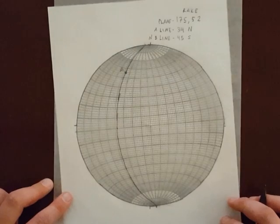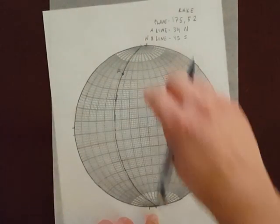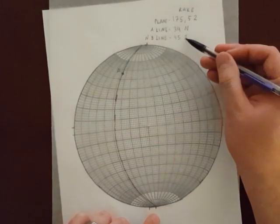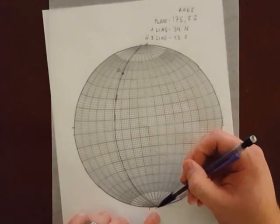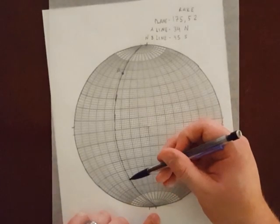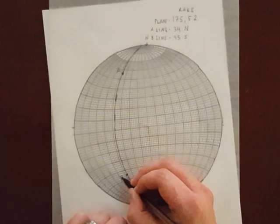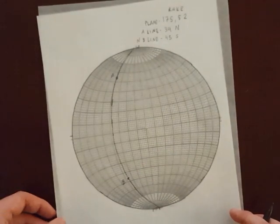Okay, so remember I'll move strike to north and south, and I'll start at the southward strike, because that's where I said to begin, and I'll count up 45 degrees: 10, 20, 30, 40, 5. And there's line B, line within the plane.